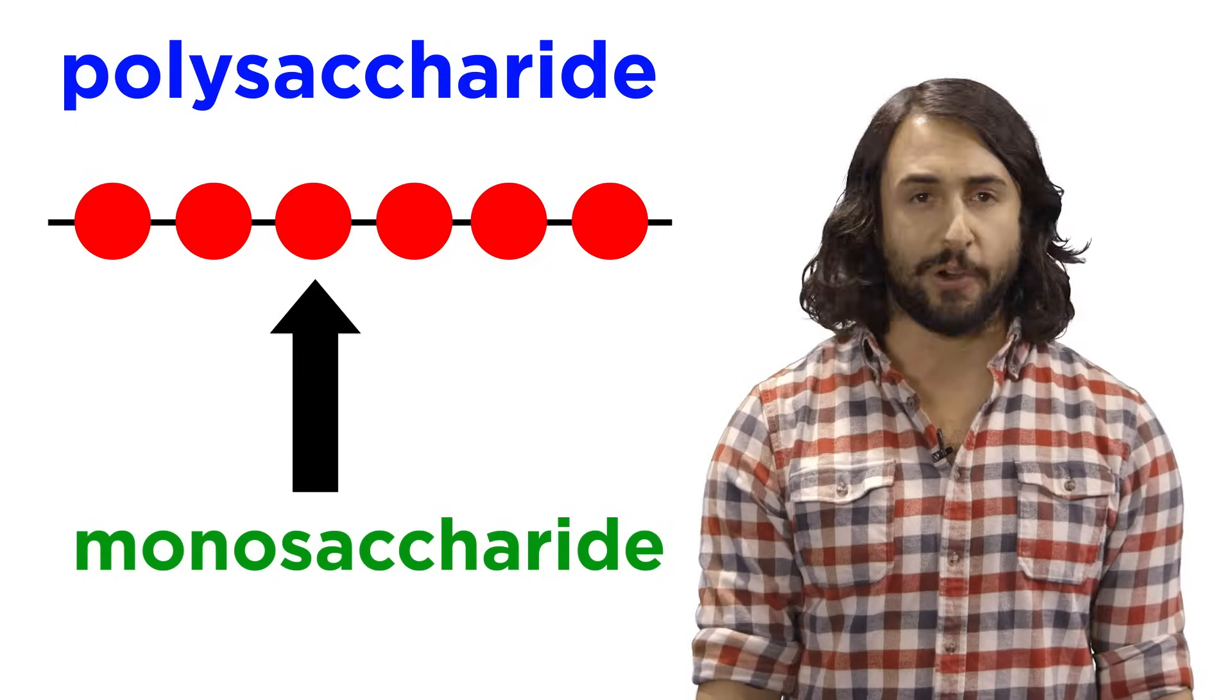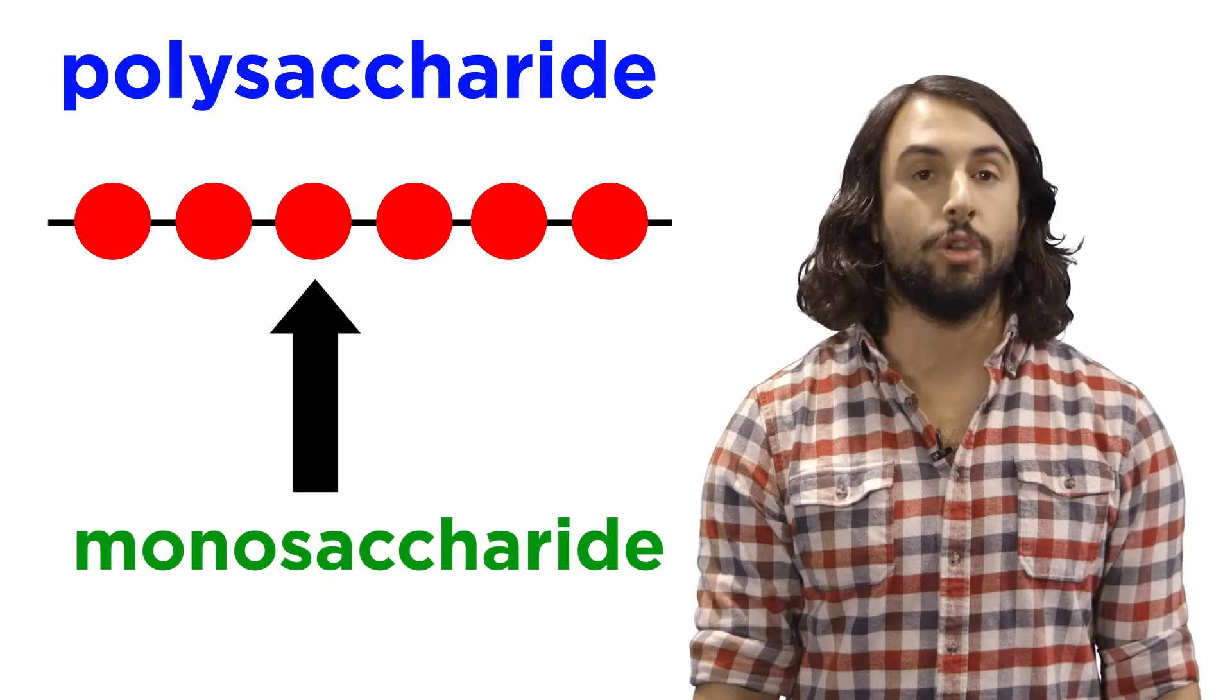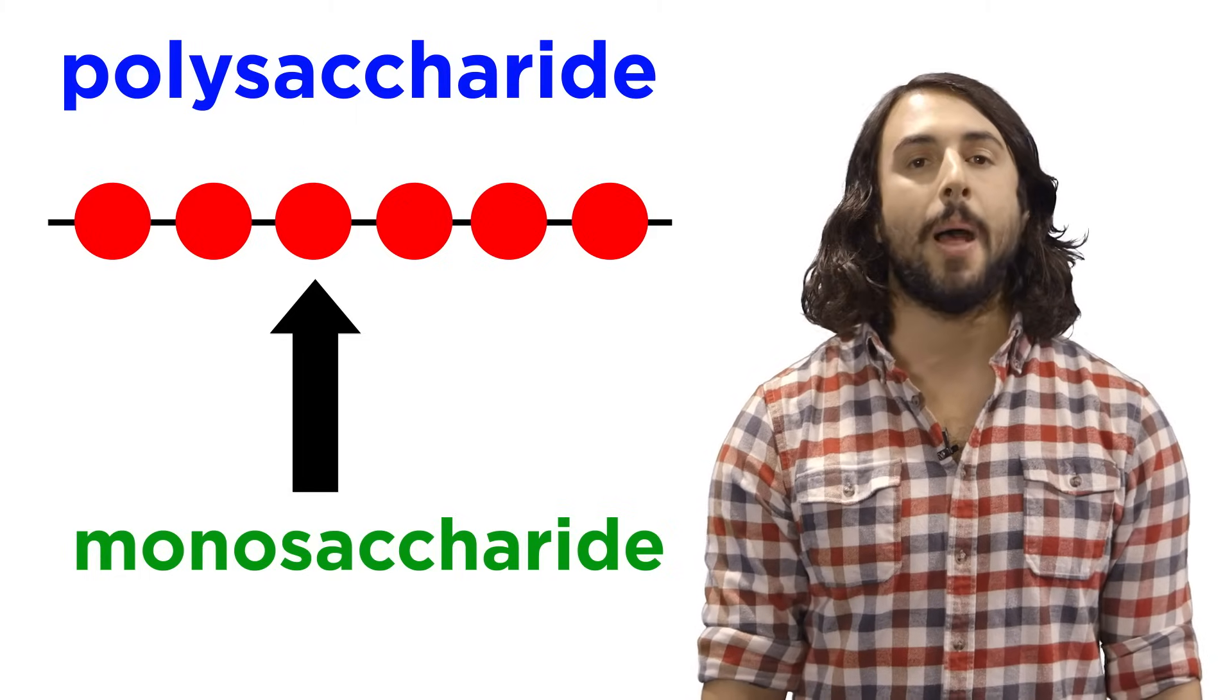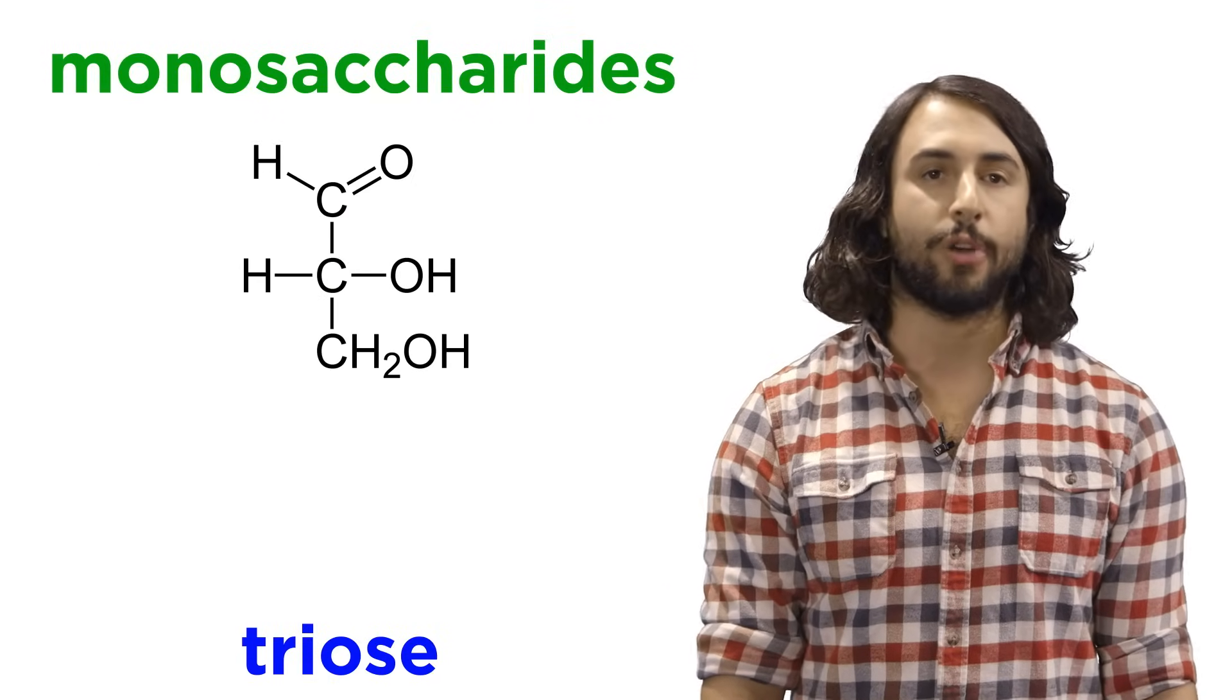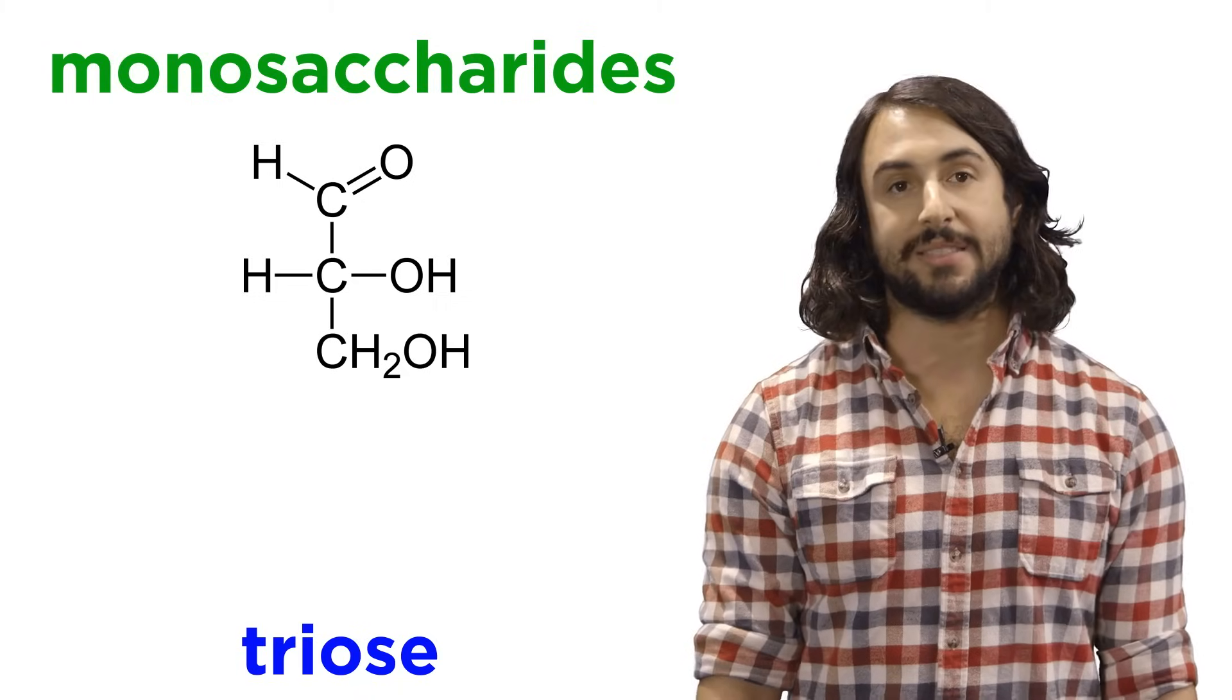Let's learn about monosaccharides first. These are the monomeric units that polymerize to form polysaccharides. We can name these according to the number of carbon atoms they have, which will be between three and six.